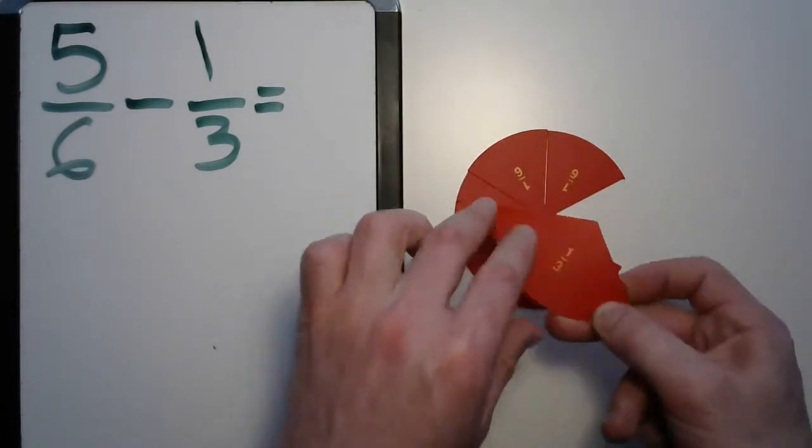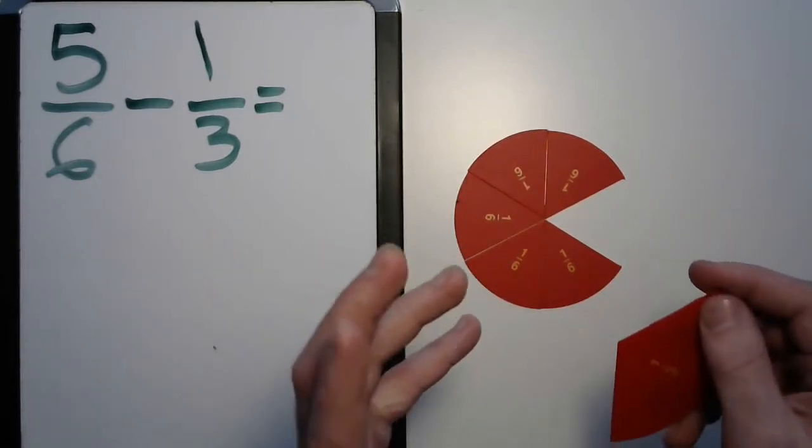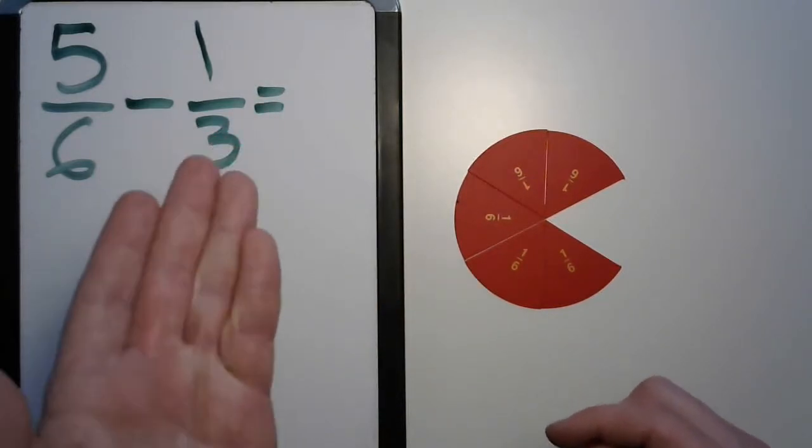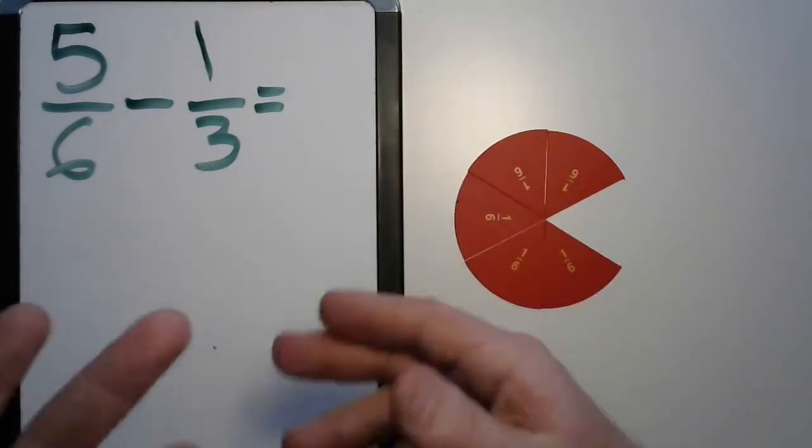But how are we going to get one of these out of there? That's going to be tough. Now you can use the pieces to see it. You can use equivalency as well. But is there some way we could change that third into sixths? And how many sixths would we get?